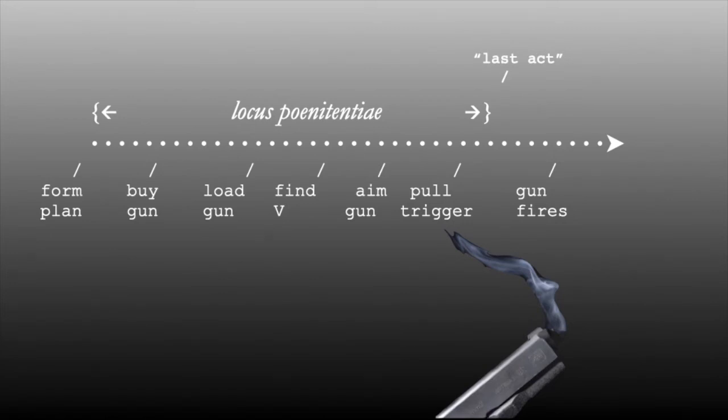If the bullet fatally strikes the victim, it is homicide, and no attempt crime can be charged. If it misses, an attempted homicide has occurred. Or had it occurred already, at some earlier point, before the trigger was pulled?